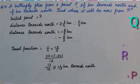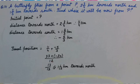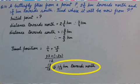Its final position will be 11 upon 4 plus minus 5 upon 3. When we solve it, we get 13 upon 12. Answer is positive. It means its position is 1 and 1 by 12 km towards north from P.